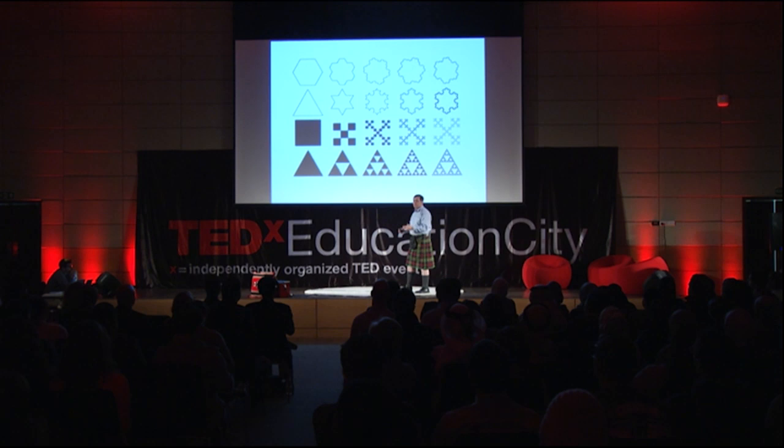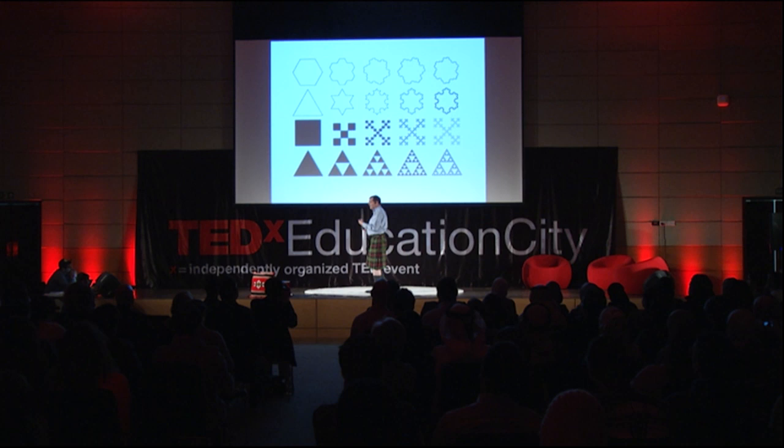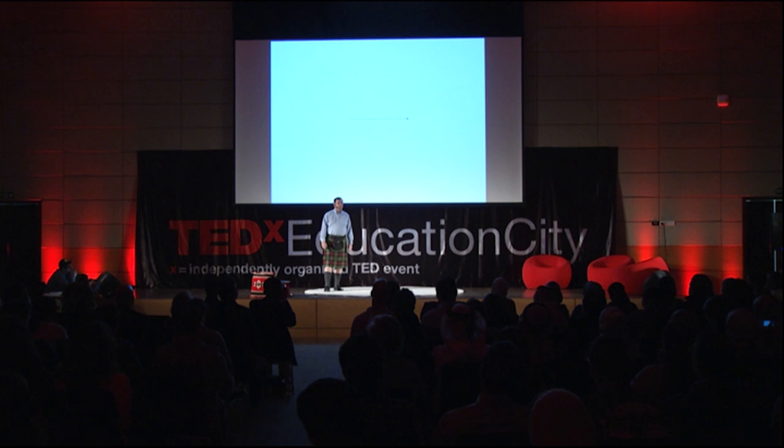You take a square, replace it with five squares, replace those five squares with five squares, and before you know it you've got more squares than you can count. The one above that is the Koch snowflake, and that's the one I want to talk about a little bit.